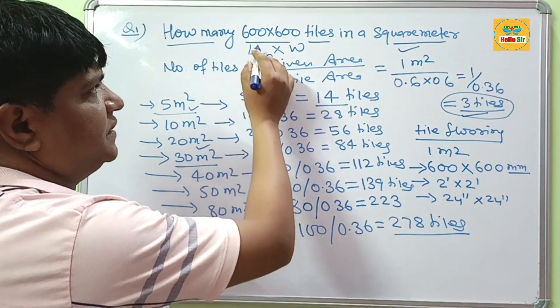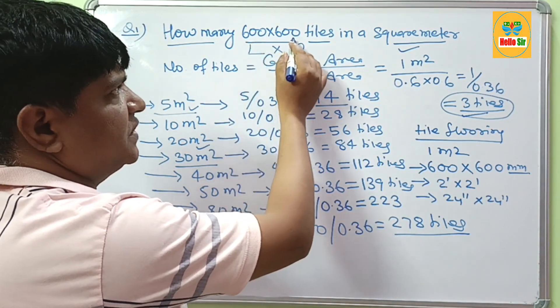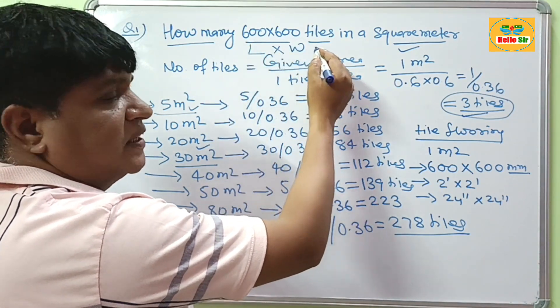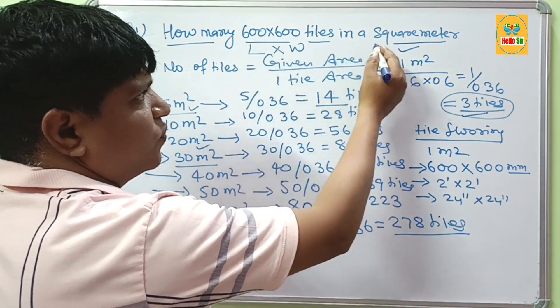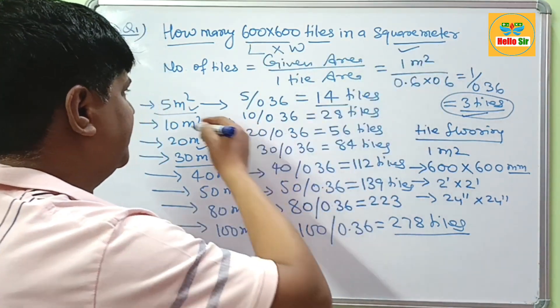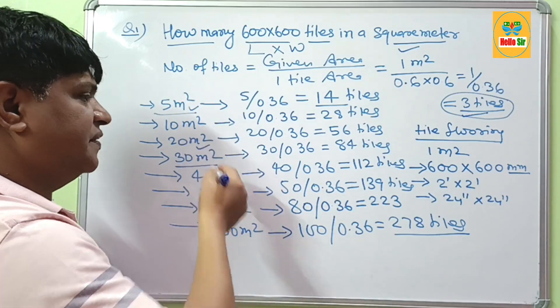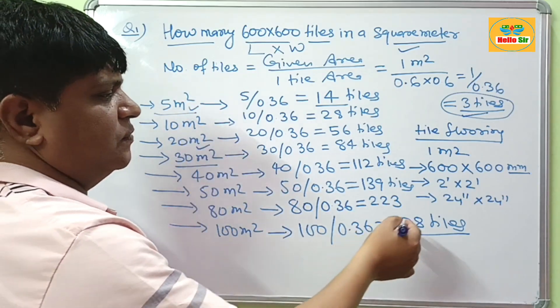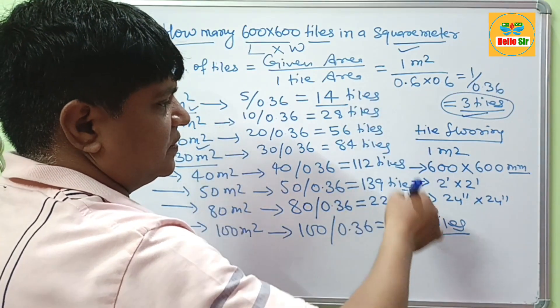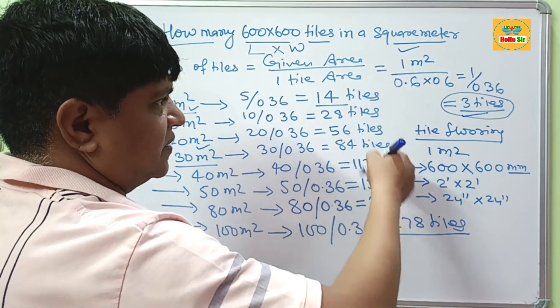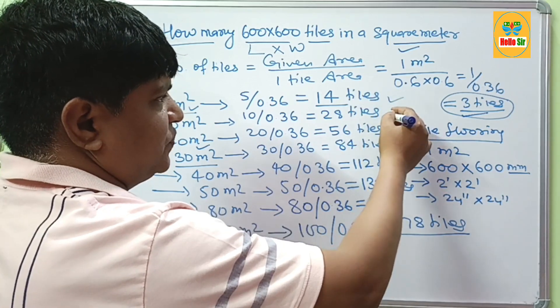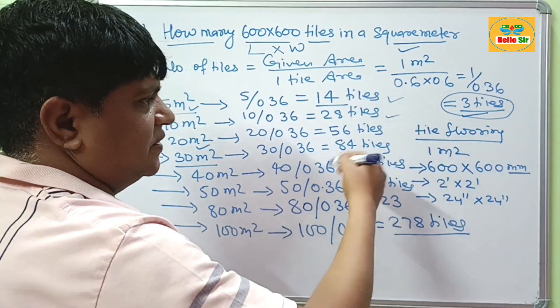So if you want to calculate how many 600x600 tiles are required for 1 square meter, 5 square meters, 10 square meters, and so on, you now have the answers: 3 tiles, 14 tiles, 28 tiles, and continuing with the same formula for larger areas.